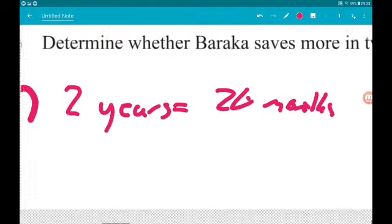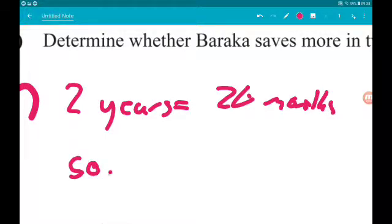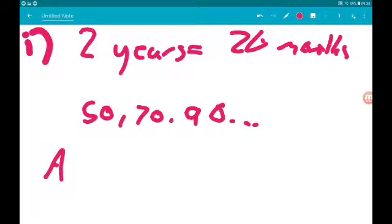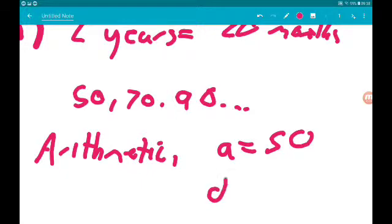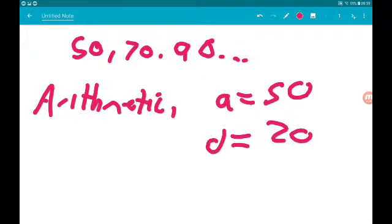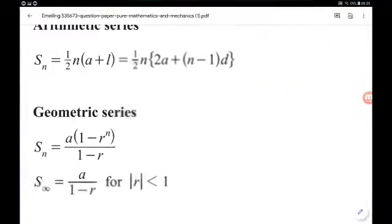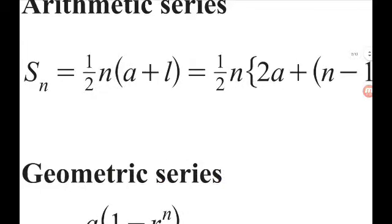Now, the sequence is going to be 50, 70, 90, etc. So it's arithmetic. Now, the first term is 50, and the difference is 20, and n is 24.